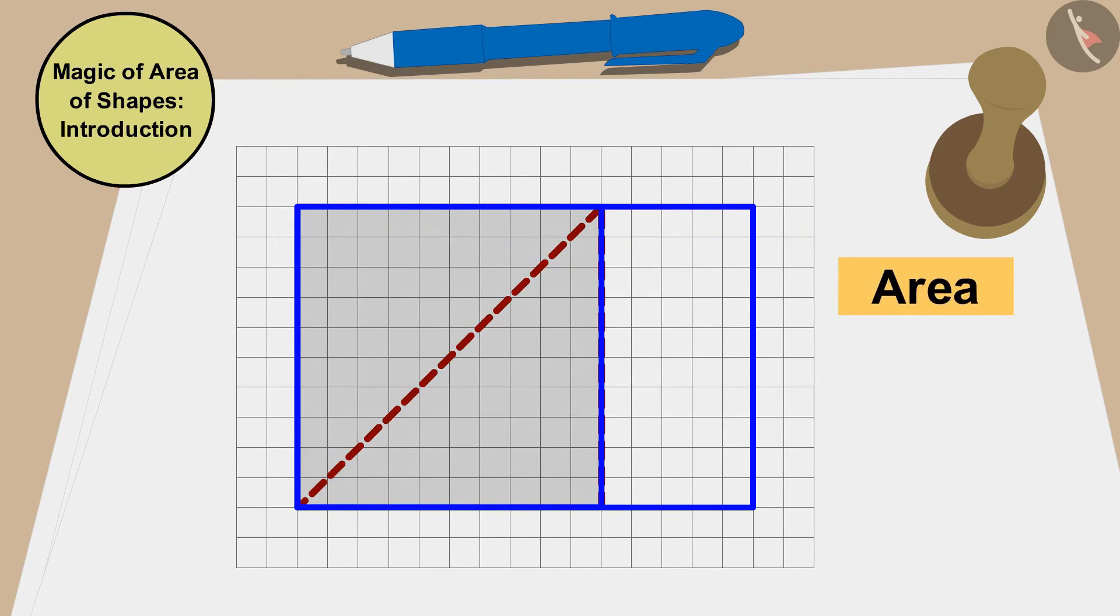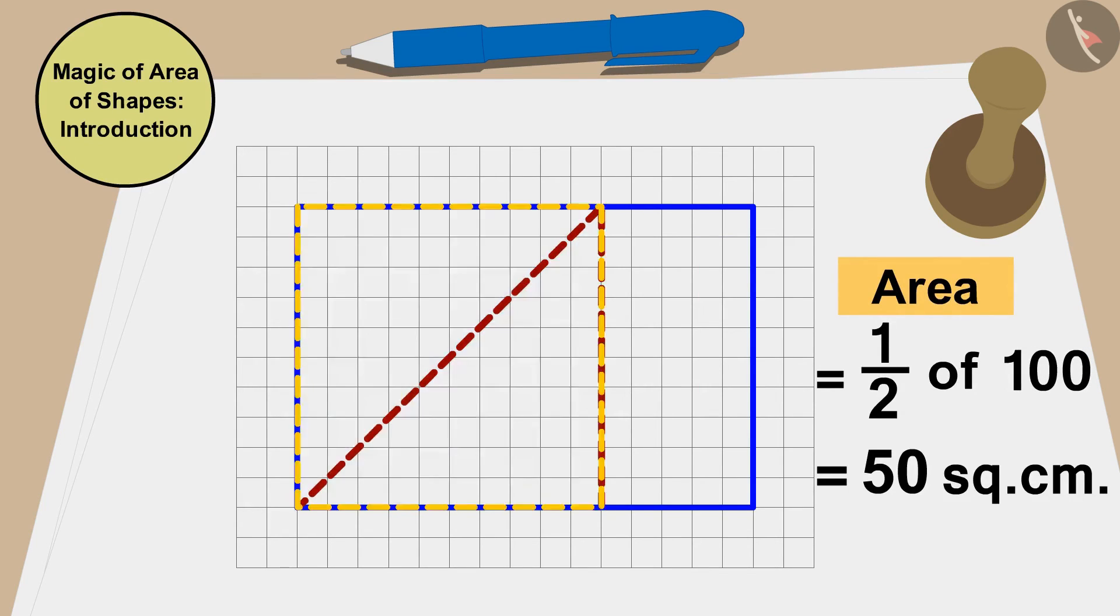The area of this square is 10 times 10, 100 square centimeters. Therefore, the area of these two triangles is exactly the same as half or 50 square centimeters of this square.